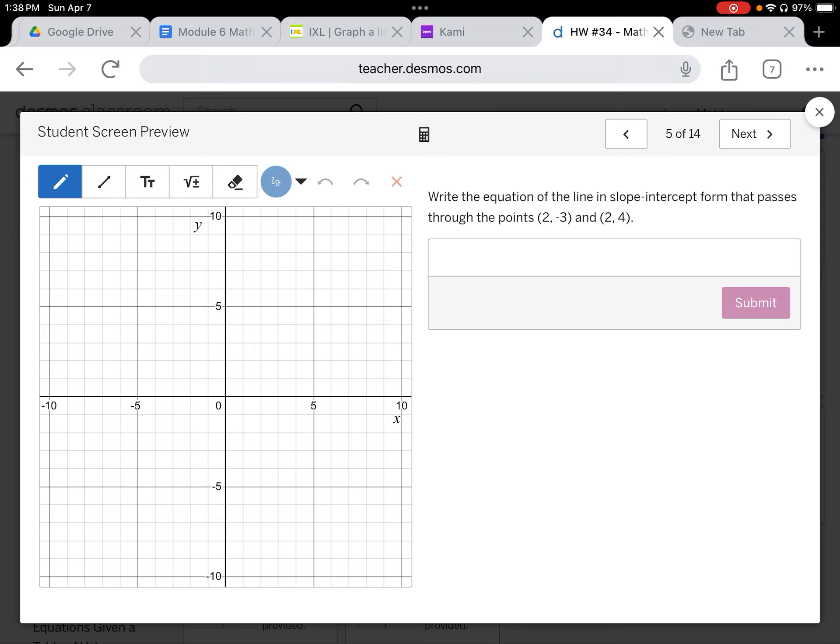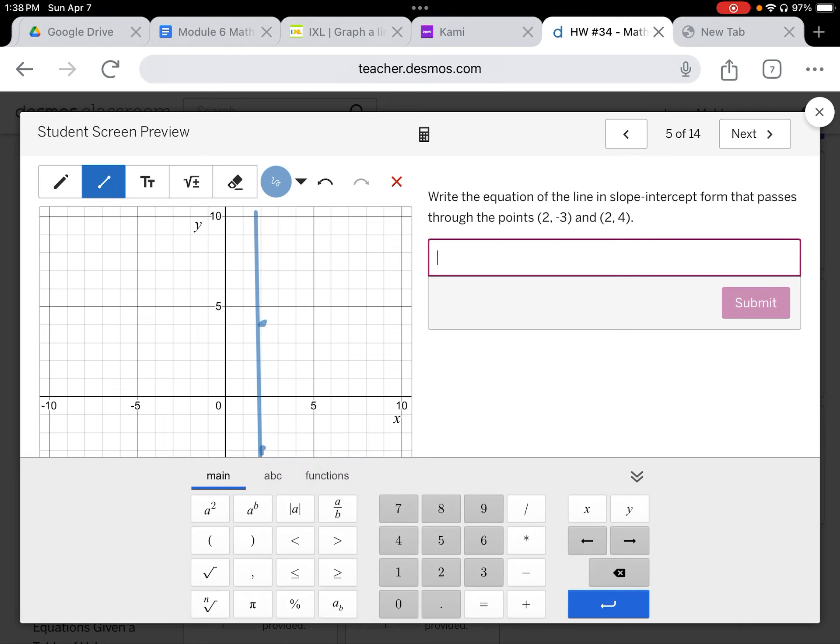Slide five. We want to write the equation of a line that passes through the points two, negative three, which is there, and two, four, which is there. If we want a line that goes through two, negative three and two, four, it's going to need to be vertical, and excuse the fact that this isn't perfect. I'm doing this with my finger. I don't have a stylus, but you get the idea.